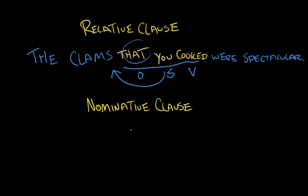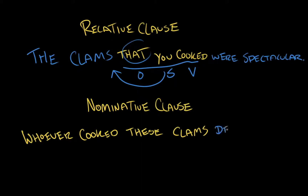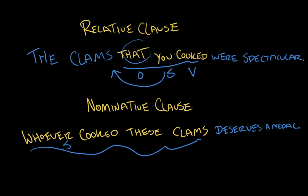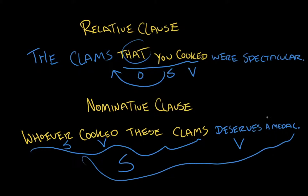A nominative clause doesn't use a relative adverb like 'that' or 'when,' but instead uses an entire clause to stand in as the subject of a sentence. For example: 'Whoever cooked these clams deserves a medal.' 'Whoever' is our subject, 'cooked' is our verb — but all of 'whoever cooked these clams' is serving as the subject for the verb 'deserves.' You can see that 'whoever cooked these clams' isn't a sentence on its own. Because it's a dependent clause, it needs to lean on other parts of the sentence, forming the subject for the broader sentence and thus creating an independent clause.